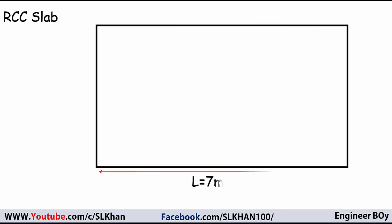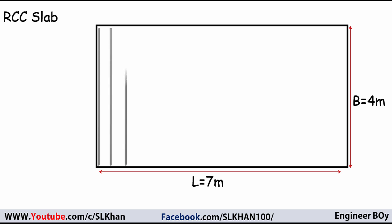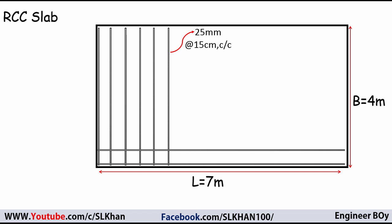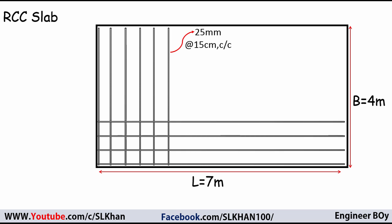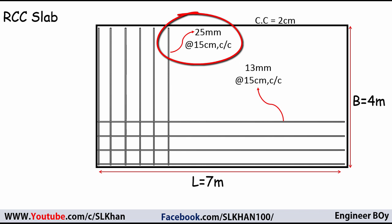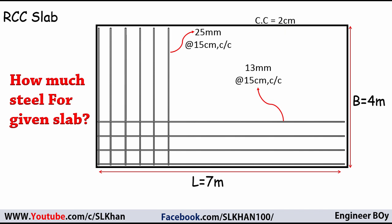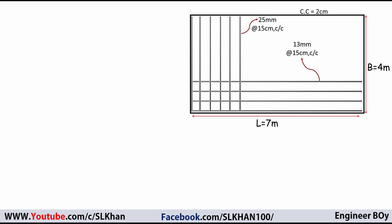Previously on Engineer Boy this video was uploaded in Pashto language, and this time I'm going to upload in English. We have a slab with length equals 7 meters and breadth equals 4 meters. There are main bars and temperature bars. Main bars are 25mm at 15cm center-to-center, temperature bars — also known as distribution bars — are 13mm at 15cm center-to-center, and there is 2cm concrete cover at each side. We need to determine the steel quantity for the given slab.